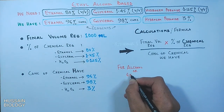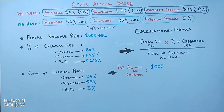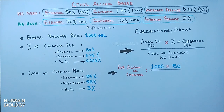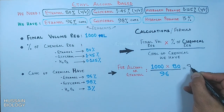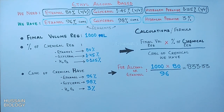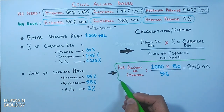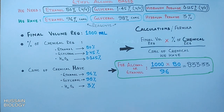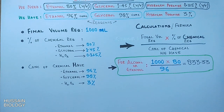For ethanol, the formula becomes: 1000 (final volume) × 80 (percentage required) ÷ 96 (percentage concentration of ethanol available). From this we get 833.33 ml — that means we need 833.33 ml of ethanol for the formulation.